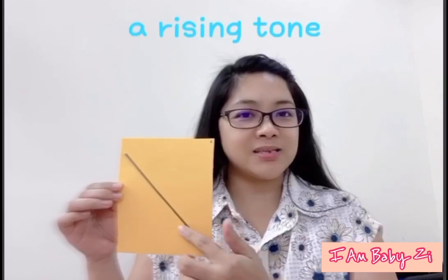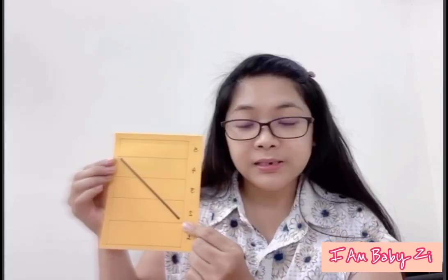Now we go to the second tone. The second tone is a rising tone. In our chart, it goes from the second range up to the fourth range of our speaking voice. It sounds like 'á' — it's like an English word: 'What? What?' So: 'á', 'má', 'bá'. That's the sound for the second tone.